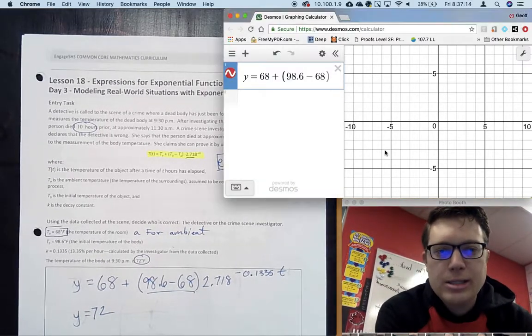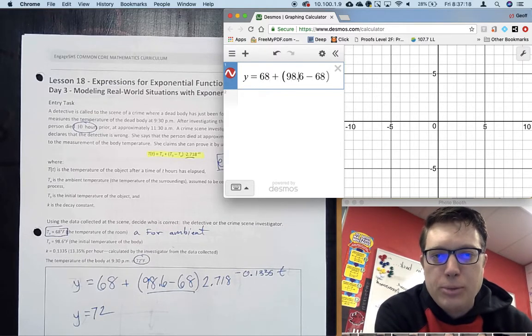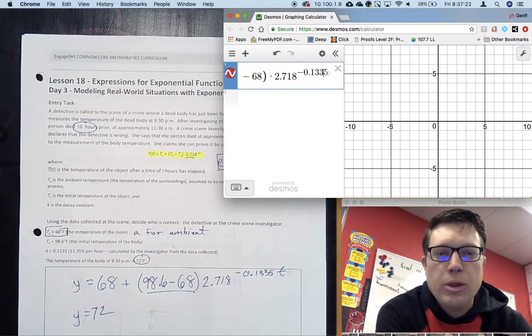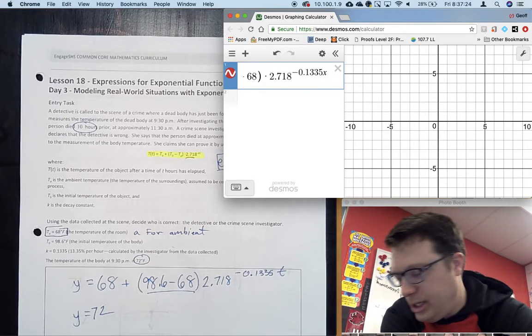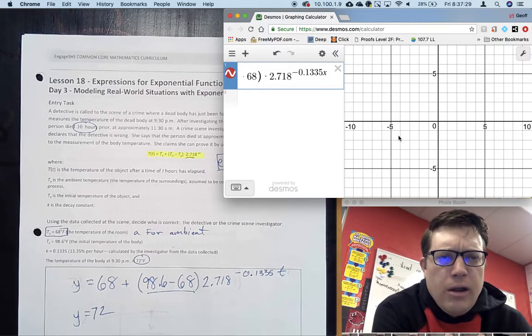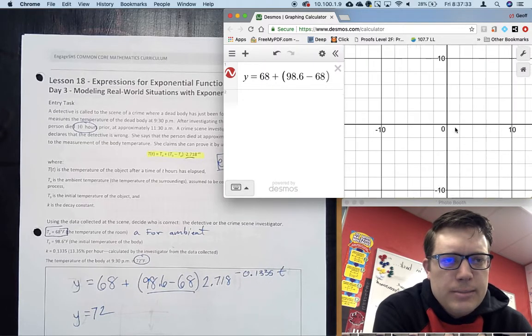But you're not at that level. Right now we have a very powerful tool called Desmos. I prepped this already: I typed in 68 plus 98.6 minus 68 times 2.718 to the power of 0.1335X. I use X because Desmos likes to formally define inputs as X, and then I graphed it.